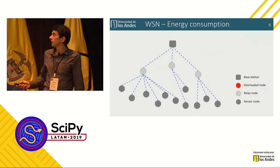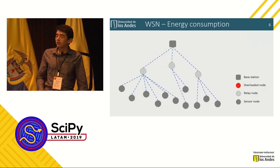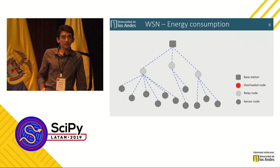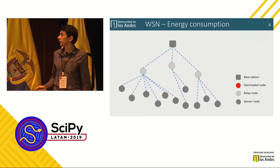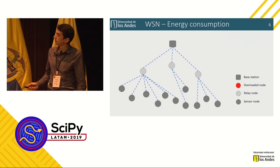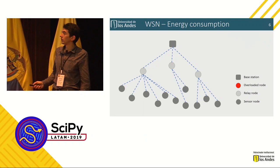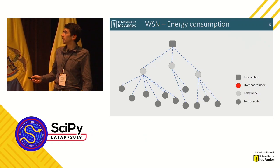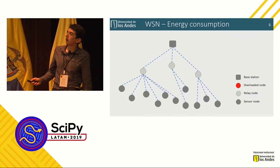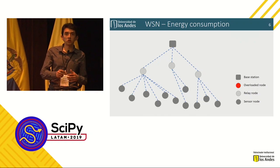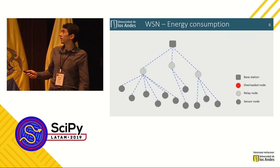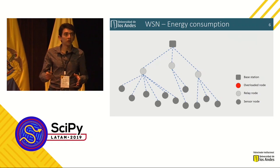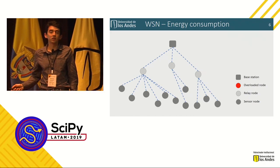In this approach, we address these three points: cost, lifetime, and coverage. A wireless sensor network is composed of three types of nodes: sensor nodes that monitor the environment and generate data; relay nodes that serve as a communication bridge between sensor nodes and the base station node; and the base station node that collects all data generated by sensor nodes.